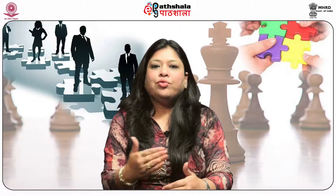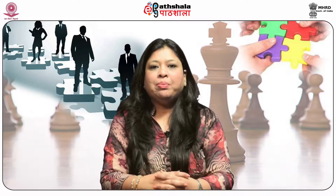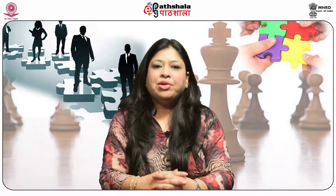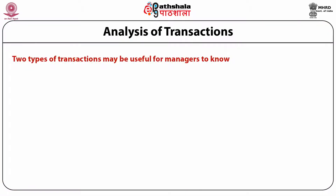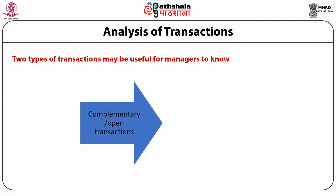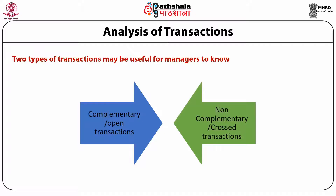TA, short for transactional analysis, is usually used in management parlance and may be used to explain why people behave in specific patterns throughout their lives. This analysis enables people to identify the patterns of transactions between themselves and others. Ultimately, this can help us determine which ego state most heavily influences our behavior and the behavior of other people with whom we interact daily, personally or professionally. In transactional analysis, there are two types of transactions: complementary or open transactions, and non-complementary or cross transactions.